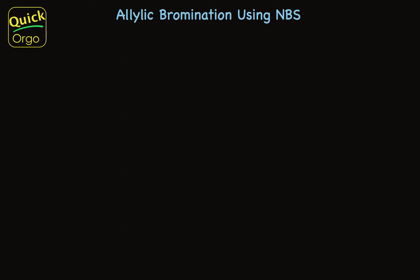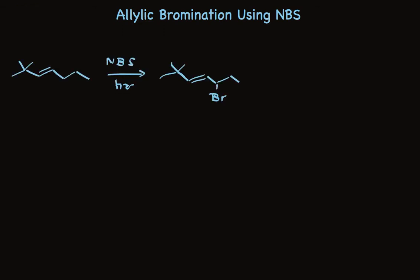I want to show you an interesting reaction of alkenes that occurs selectively at allylic positions. When an alkene is treated with NBS and light, bromine selectively appears in place of a hydrogen at the allylic position.